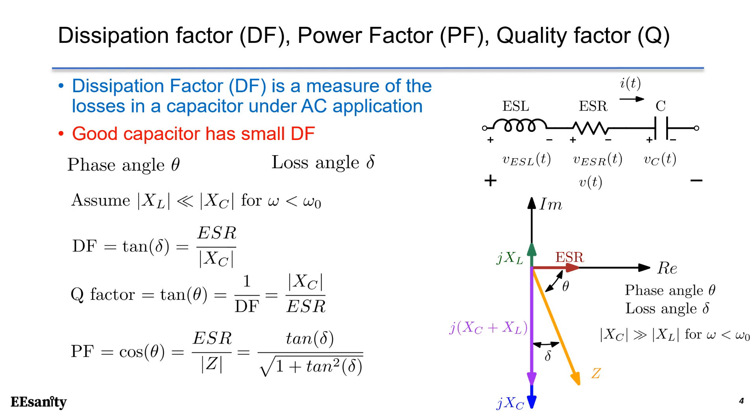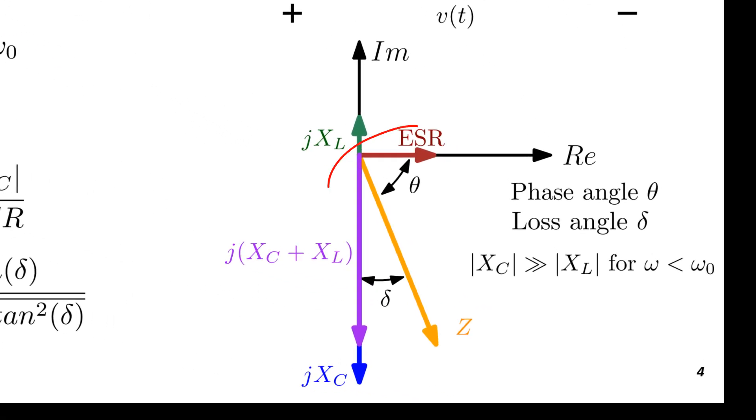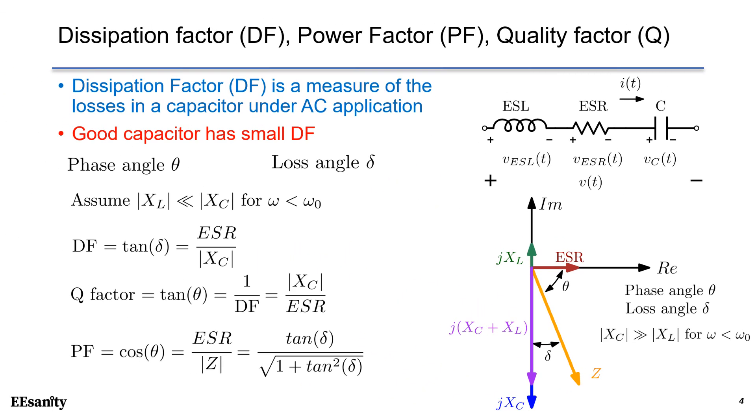Dissipation factor is a measure of the losses in a capacitor under AC application. In the plot, we can see there are two angles. The first one is called phase angle θ, which is the angle of Z from the real axis. Another one is the loss angle δ, that is the angle between Z and negative imaginary axis.